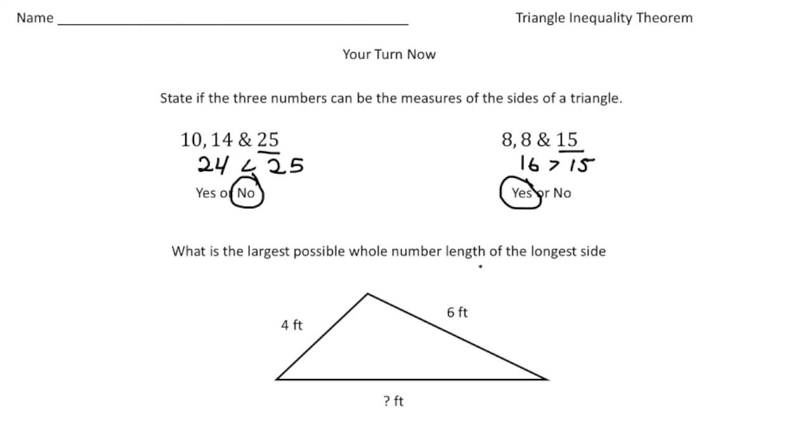And then finally it says, what is the largest possible whole number length of the longest side? So here we know one side length is 4, and this side length is 6, and I know that the sum of these two numbers, 4 and 6, has to be greater than this one. And they want the largest whole number possible. So again, 4 plus 6 is 10, so one number less than 10 is 9, so 9 would be the answer. All right, how'd you do?